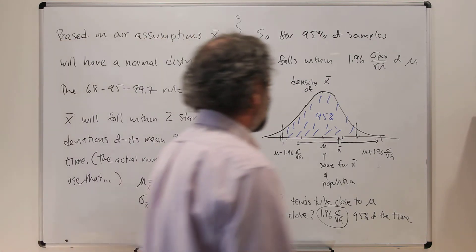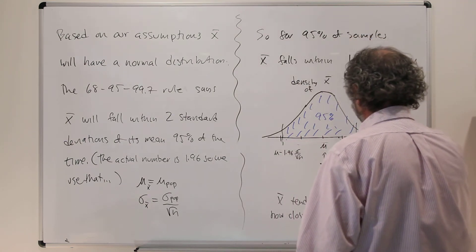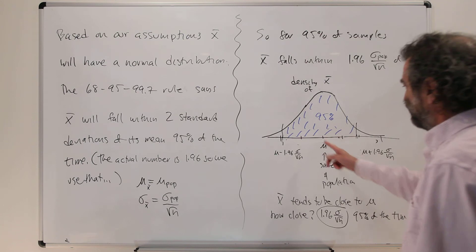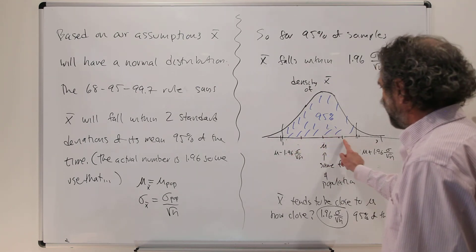So we have a picture of the density function here. Get this out of the way. So here's the mean in the center, and here's that distance. I have it marked off in standard deviations.